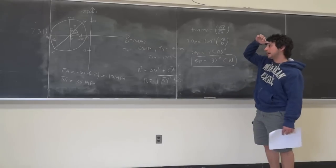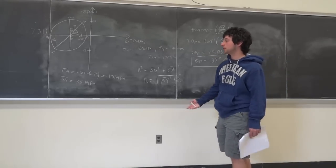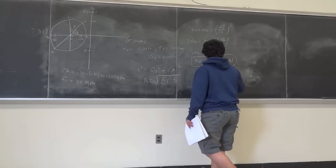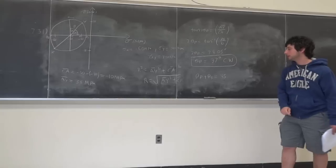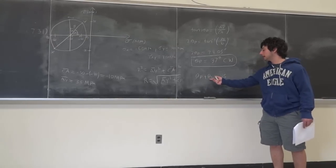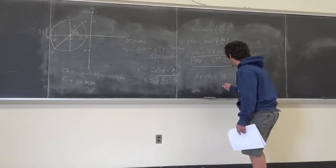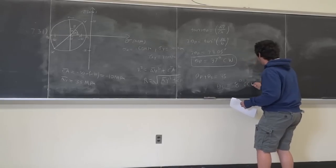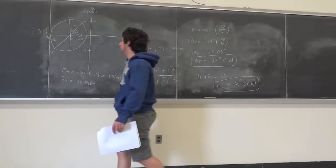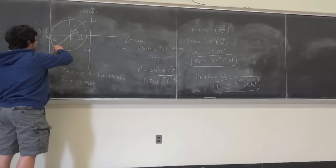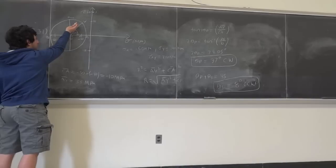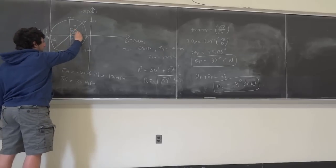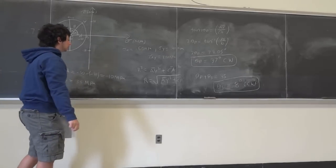We want theta S. From Mohr's circle, theta P plus theta S equals 45 degrees, because they're double angles — equivalently 2 theta P plus 2 theta S equals 90 degrees. So theta S equals 45 minus 37 equals 8 degrees, and this is going counterclockwise. The two angles are in opposite rotation directions because you have to bring the line from the X-Y diameter onto the tau axis.